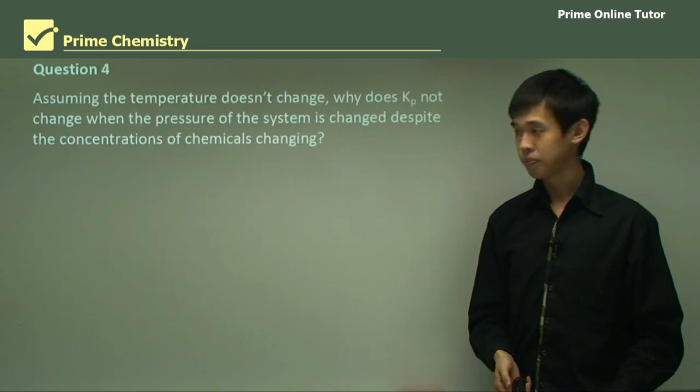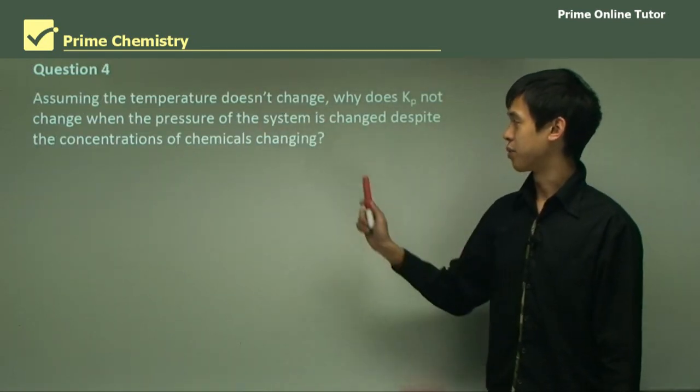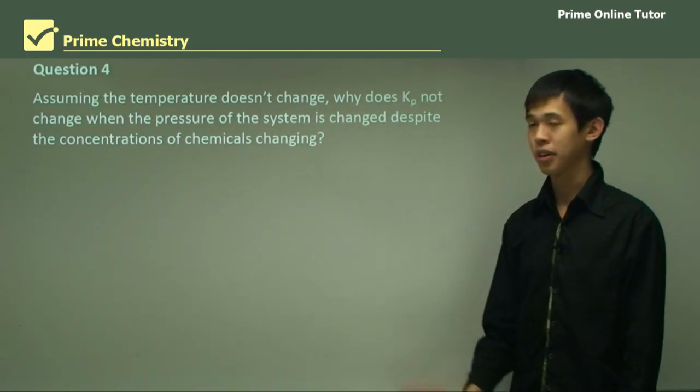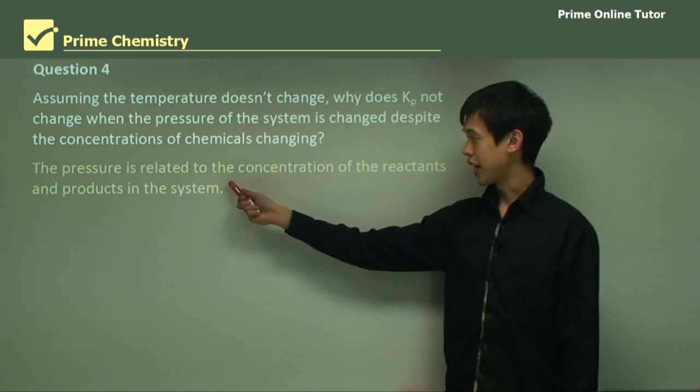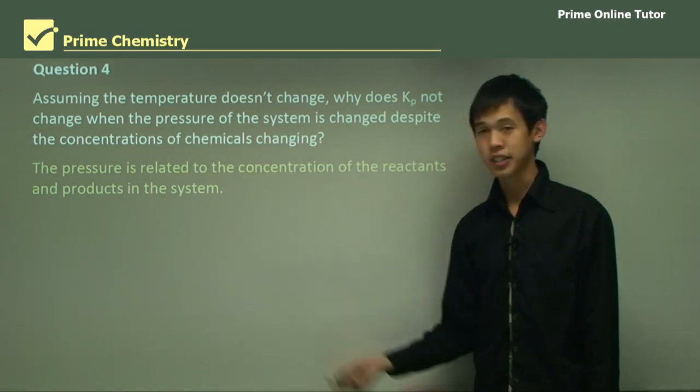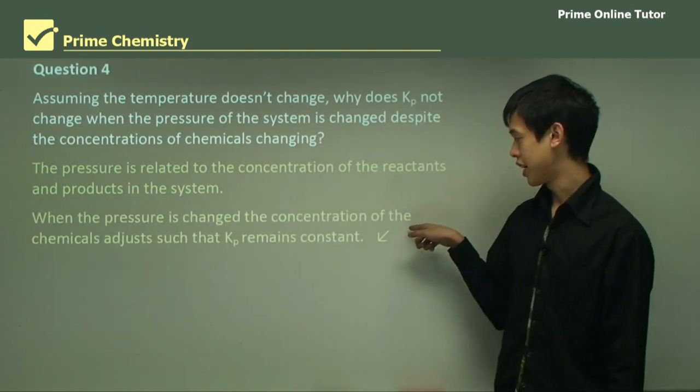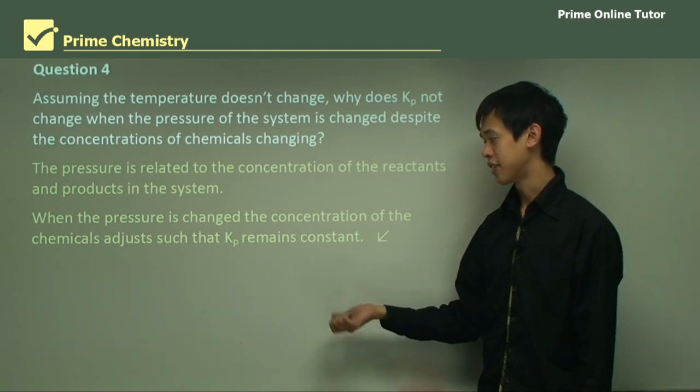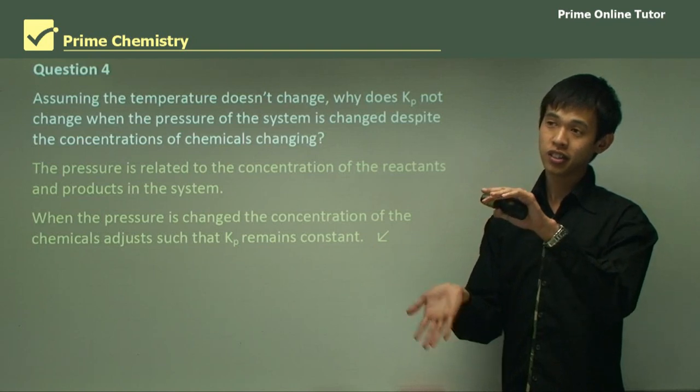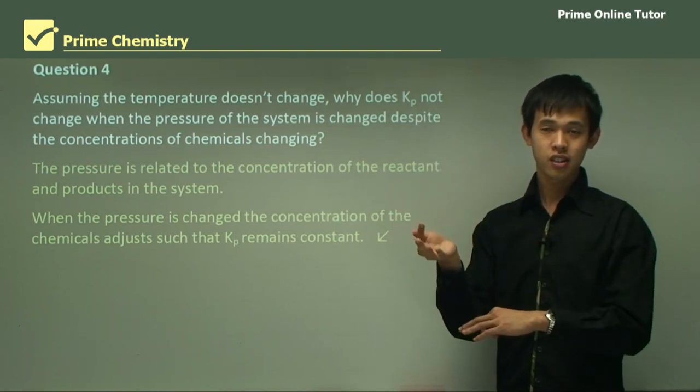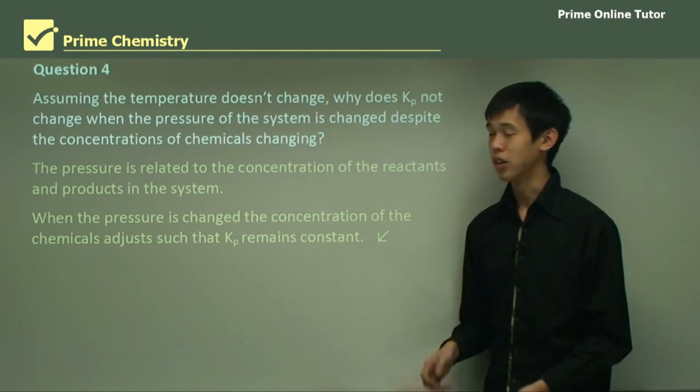So moving on, assuming the temperature doesn't change, why does Kp not change when the pressure of the system is changed, despite the chemical concentrations changing? So the pressure is related to the concentration of the reactants and products in the system. That's one thing. So when the pressure is changed, the concentrations of the chemicals adjust, such that Kp remains constant. Similar to what I just said, if the concentrations increase or decrease, then their effect is sort of counteracted by the other chemicals. And so we have Kp always remaining constant.